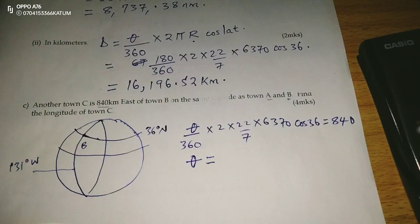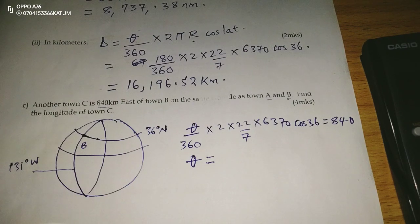It means we will take 840, multiply by 7, multiply by 360, then divide by all these, which is 2 times 22, multiplied by 6370,